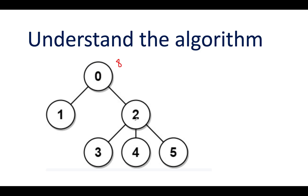Now let's calculate the distance of node two with respect to all other nodes. The distance from zero is one, from one is two, from three is one, from four is one, and from five is one. This adds up to a total of six.